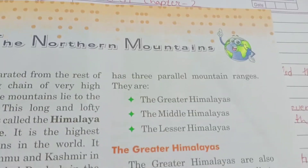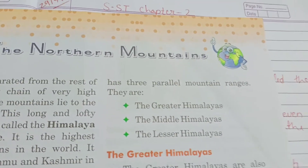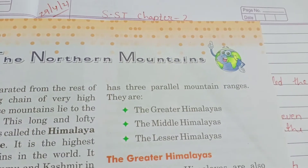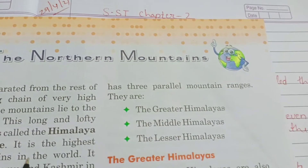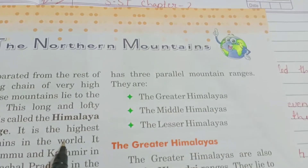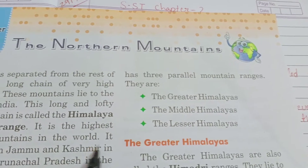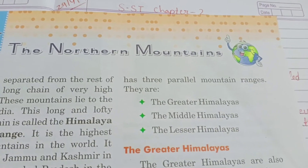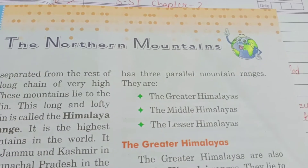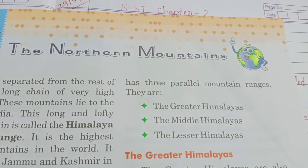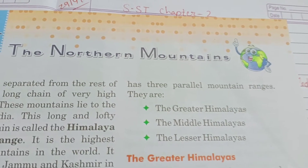This is the highest chain of mountains in the world. It stretches from Jammu and Kashmir in the west to Arunachal Pradesh in the east.